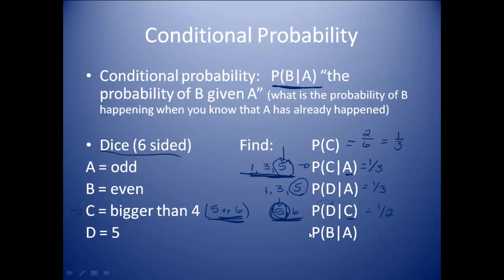Then the last one: the probability of B given A — the probability of rolling an even given that I rolled an odd. My odds are selecting from 1, 3, and 5. My chance of getting an even out of those is 0. So I have a 0 chance of that one happening.